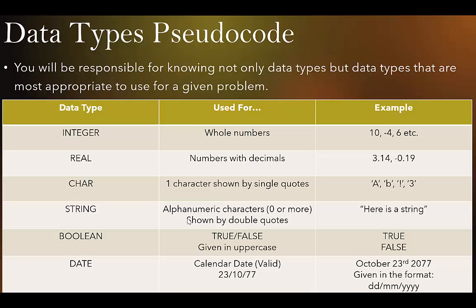And then we have DATE, which is a calendar date and must be a valid calendar date. For example: 23/10/77. If you live in most parts of the world, the date is given in this format — day, month, year. Here in the U.S. it's given as month, day, followed by the four-digit year. It's very important when you take your exam to remember it's given as two-digit day, two-digit month, four-digit year.